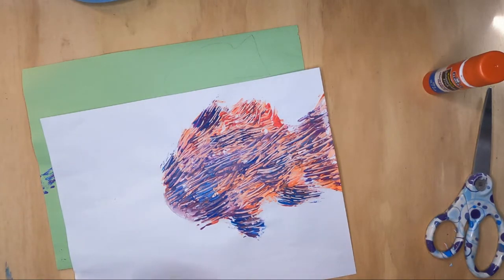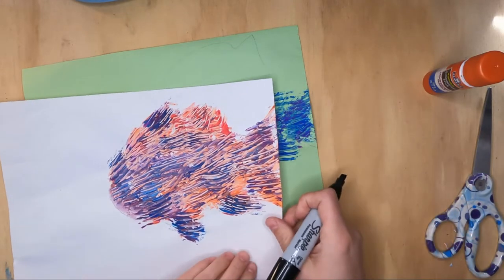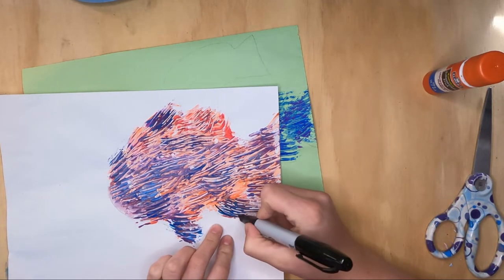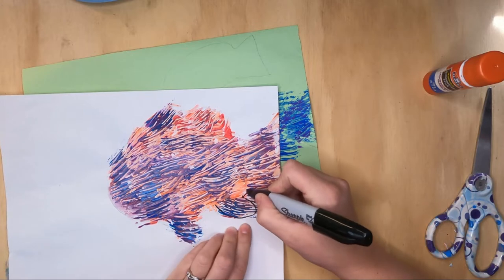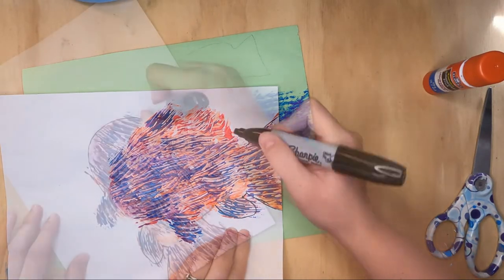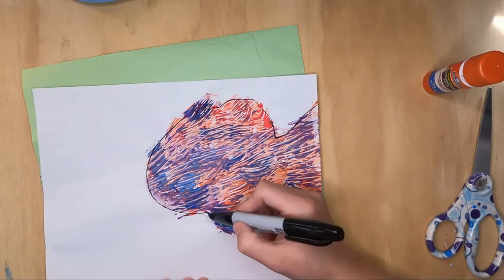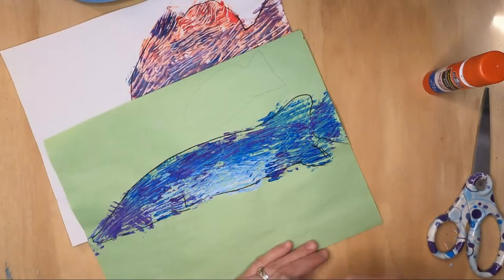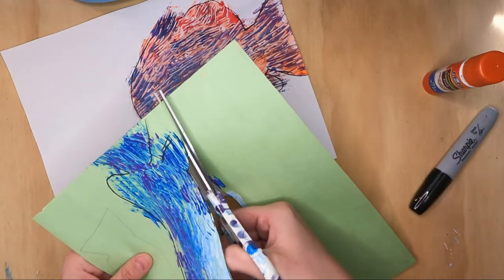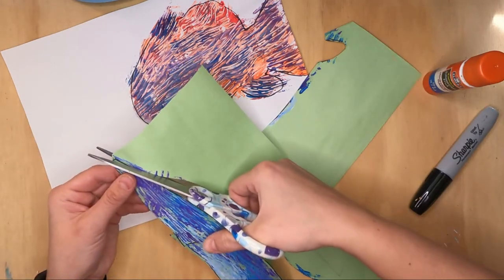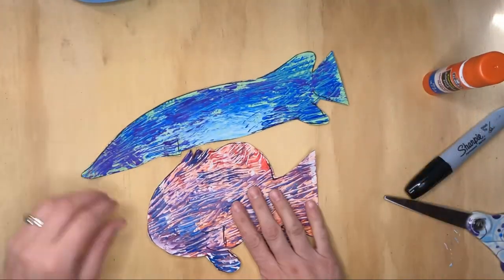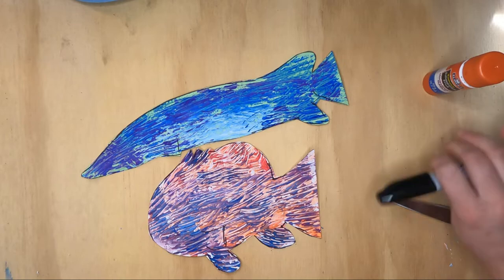But while my son's going to cut this out I want to give him a little bit more of this outline to be able to see. It helps us just imagine the fish a little bit more to help that outline pop just a little bit more. And there we go. We have our two beautiful fish.